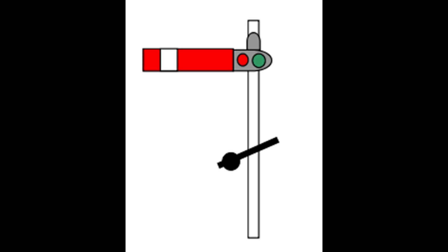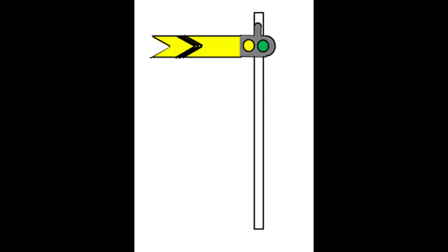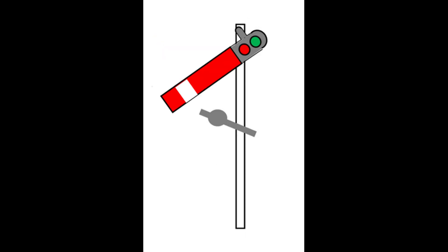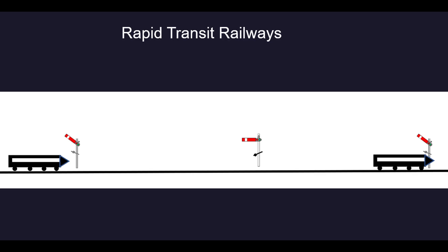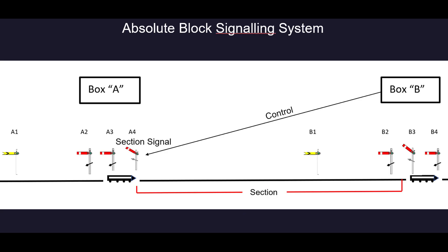Starting with semaphore signals, we look at the main signals — stop and distance signals — showing both upper and lower quadrant, rapid transit, and absolute block signalling. Here is an example of the video showing how the absolute block signalling system is operated.